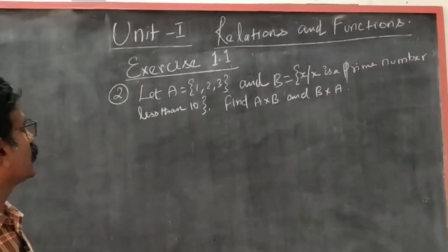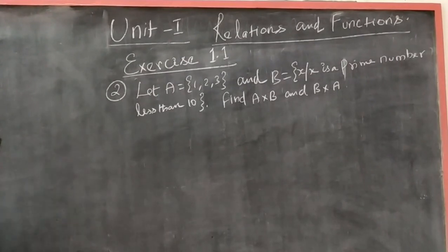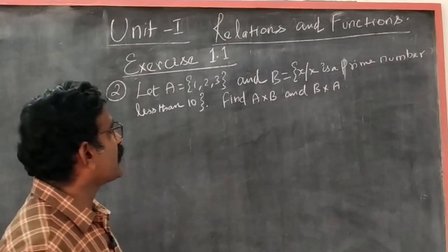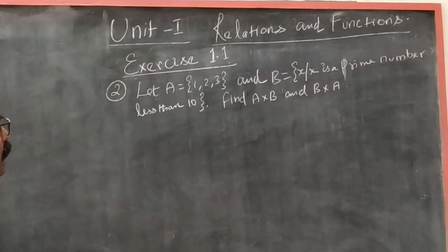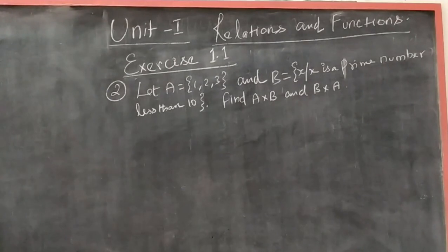Let A = {1, 2, 3} and B = {x such that x is a prime number less than 10}. Find A×B and B×A.